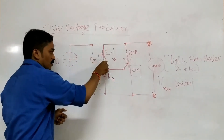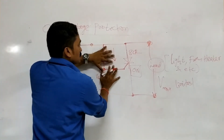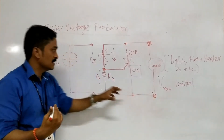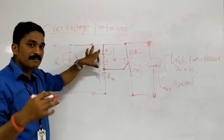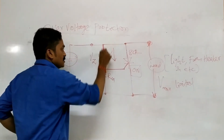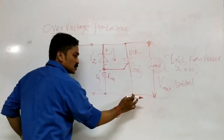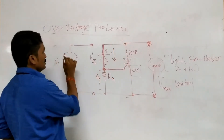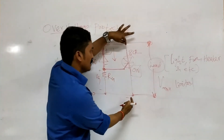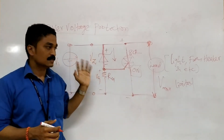When the Zener breakdown occurs, it triggers the SCR. Whenever the supply voltage is below the maximum rating, the Zener diode does not conduct, so the load operates normally. But whenever the voltage exceeds the maximum range, the Zener diode acts as a short circuit, maximum current flows through it, and that triggers the SCR. The SCR also acts as a short circuit, giving minimum voltage drop, and the electrical appliances are protected from over-voltage.